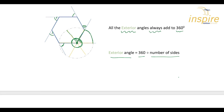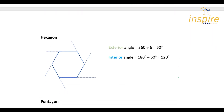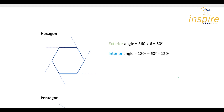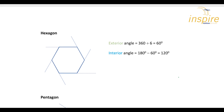Let's look at how that works for a hexagon. The exterior angles in a hexagon will be 360 divided by six, because it has six sides. So we know the exterior angle is 60 degrees. Now, using the fact that this is on a straight line — that plus that will be a semicircle — the interior angle will be 180 take away the exterior angle, which gives us 120. So for a hexagon, the exterior angle is 60 degrees and the interior angle is 120 degrees.